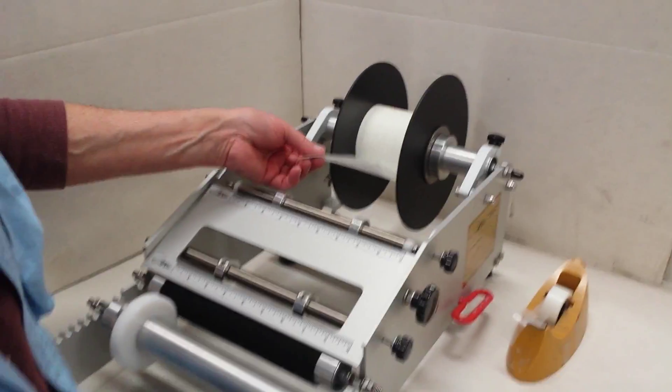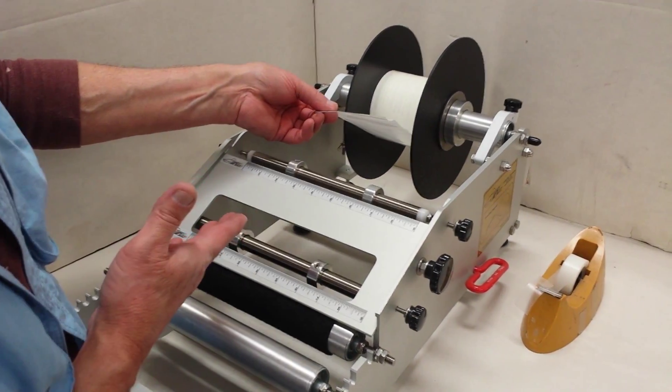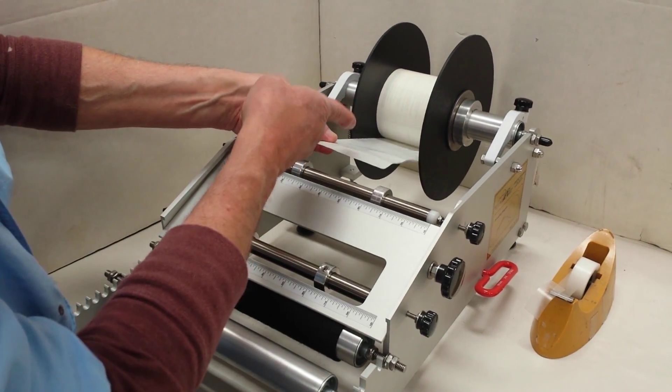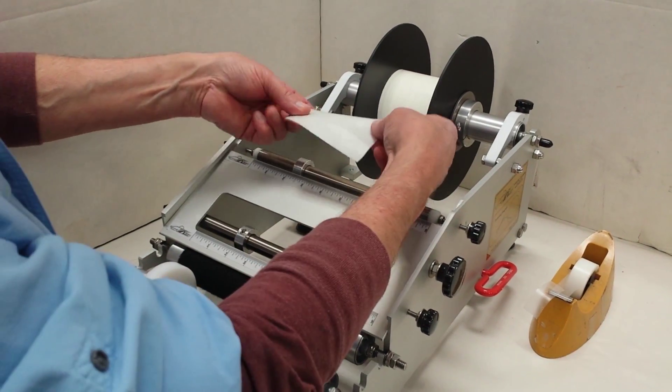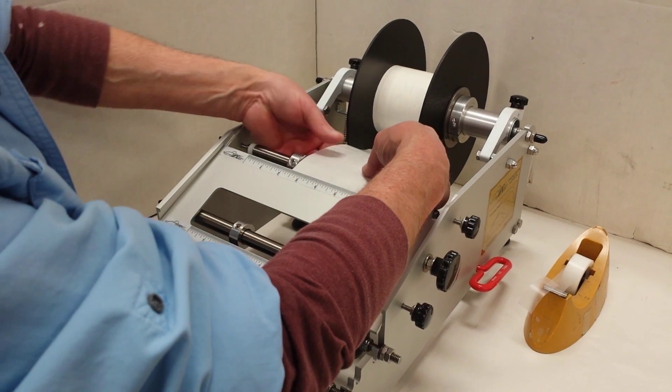In this video I'm going to demonstrate how to easily thread the RACE RL1 machine. The labels are pulling from the bottom. Come towards you, go over the top of the first guide roller.